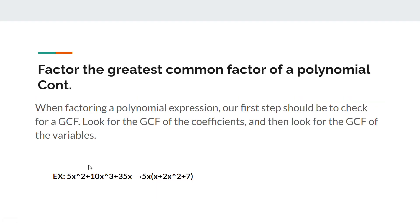Here's an example: 5x squared plus 10x cubed plus 35x. When we do factoring, we get 5x as our GCF, so we pull that out, times x plus 2x squared plus 7, which is what we have left after factoring.